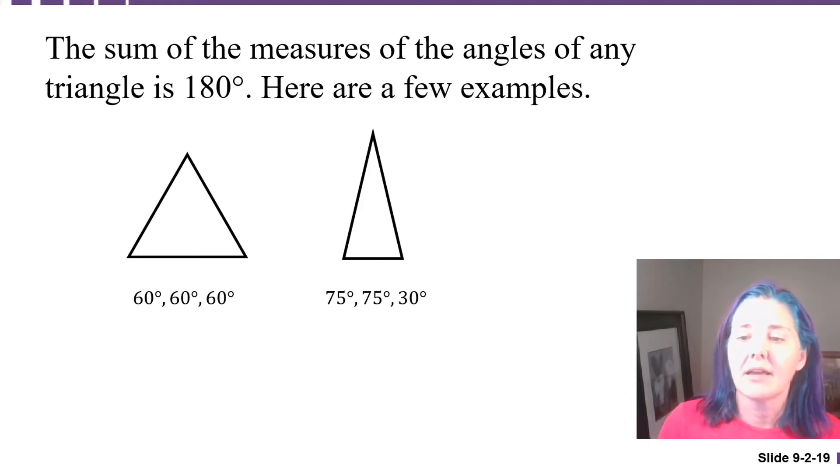This triangle has angle measures of 75, 75, and 30. You might recall that a triangle like this one, which has two equal sides, is called an isosceles triangle. 75 and 75 is 150, plus 30 is 180. And this triangle, which has no equal sides, is called a scalene triangle. It has angle measures of 15 degrees, 95 degrees, and 70 degrees. If you add 15 and 95, you get 110, plus 70 is 180.